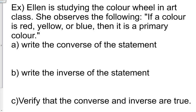Example: Ellen is studying the color wheel in art class. She observes the following: if a color is red, yellow, or blue then it is a primary color. Write the converse of this statement. The converse of the statement is: if a color is a primary color then it is red, yellow, or blue.